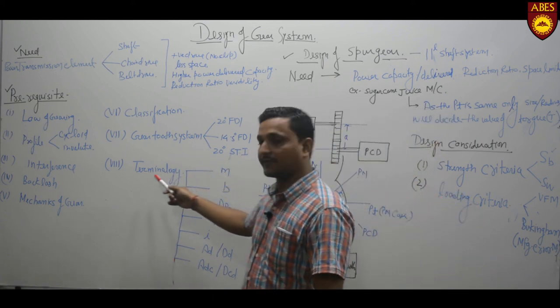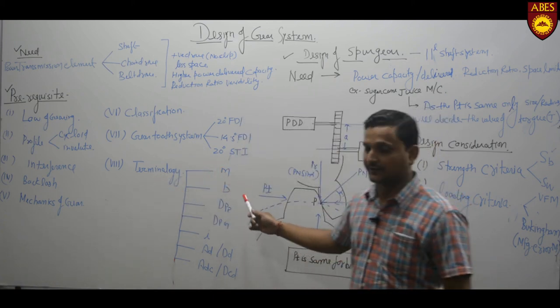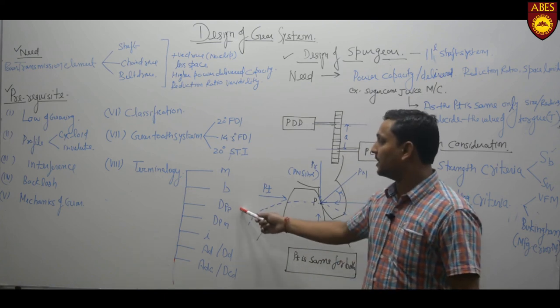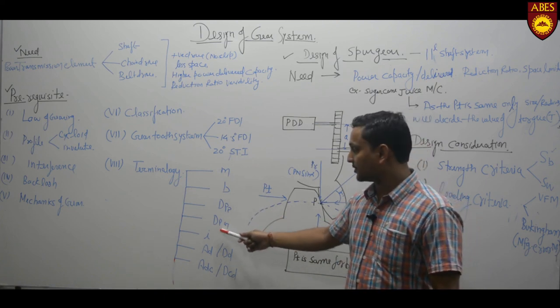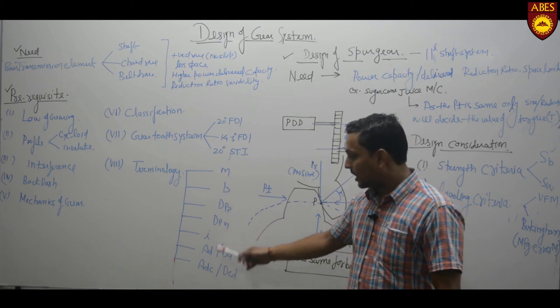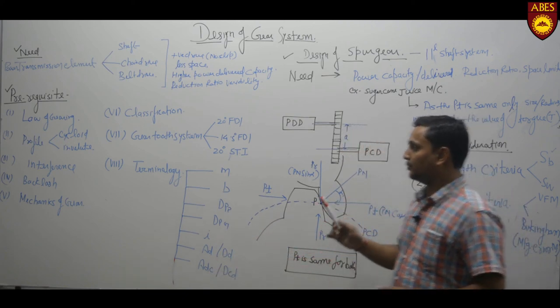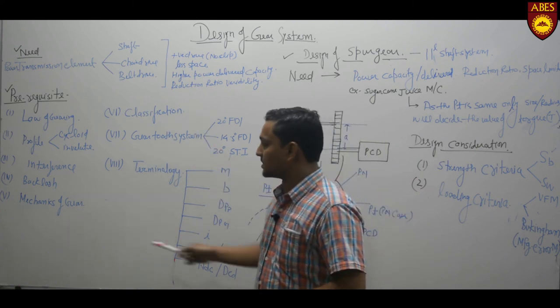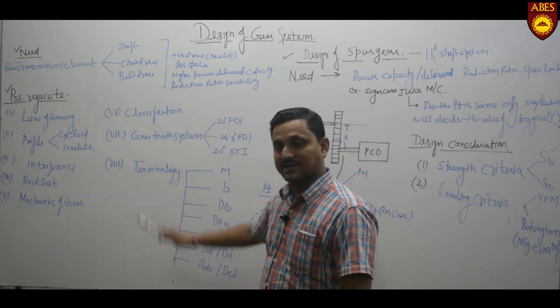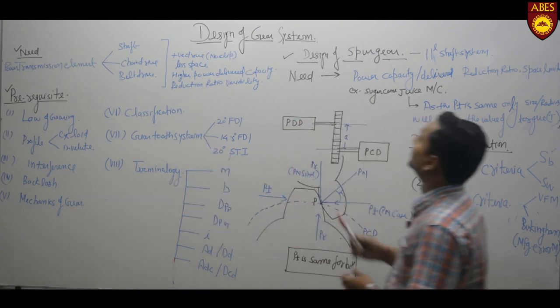The terminologies associated with the gear like module, face width, pitch circle diameter of the pinion, pitch circle diameter of the gear, reduction ratio, addendum, dedendum, cycle diameter like that. All you people have to have prior knowledge of that particular parameter to know the design parameters of gearing system.